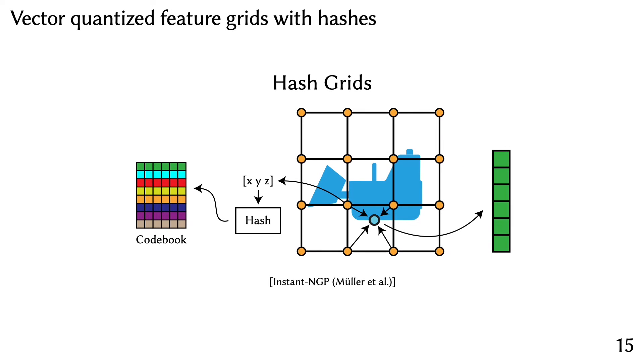An interesting related work to consider is the hash grid proposed in Instant NGP. In this work, they do not explicitly store feature vectors on a grid. Instead, they use the X, Y, Z spatial coordinates and use a hash function to generate an integer between 0 and the codebook size. The resulting integer is used to index into the codebook, and a neural network learns to deal with hash collisions.